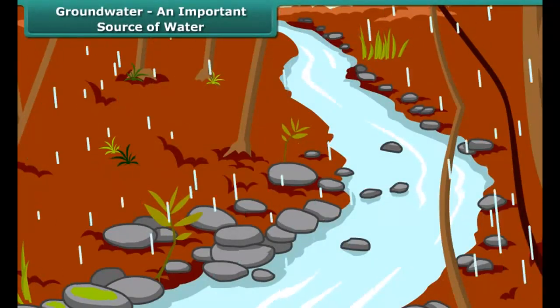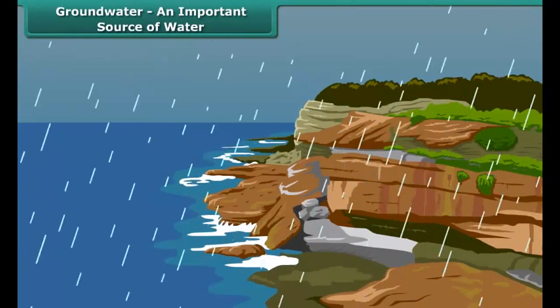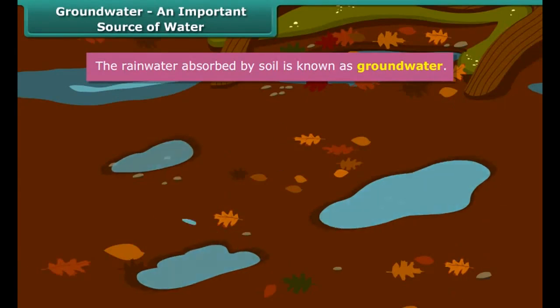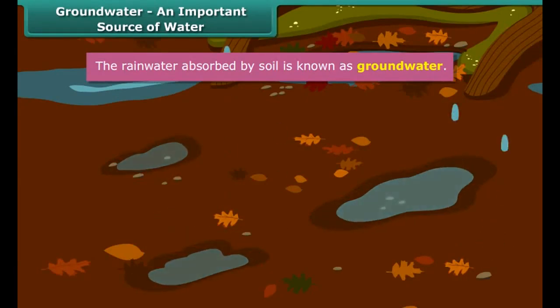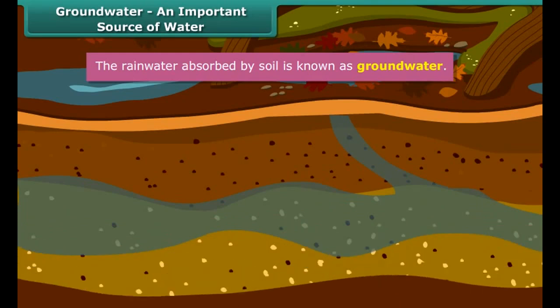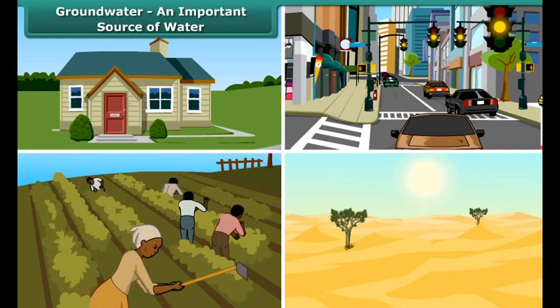Not all rainwater flows into rivers and ultimately into oceans. Some of it is absorbed by the soil. This water is known as groundwater. Although it is not visible, it is almost everywhere, flowing beneath the ground — under your home, cities, farms, and deserts.